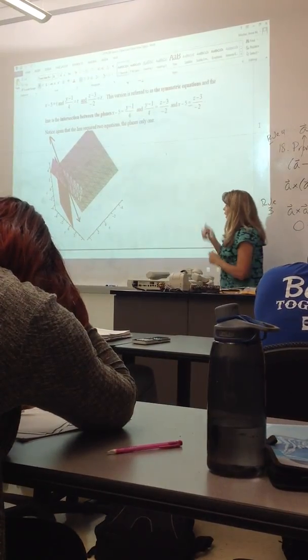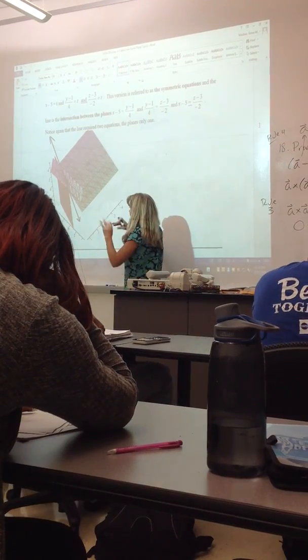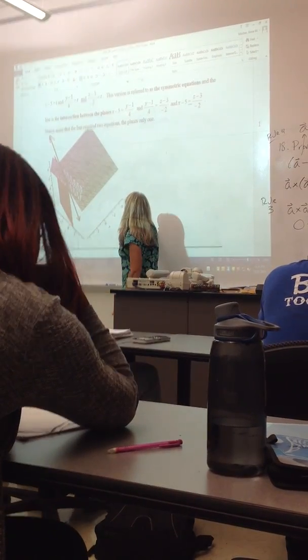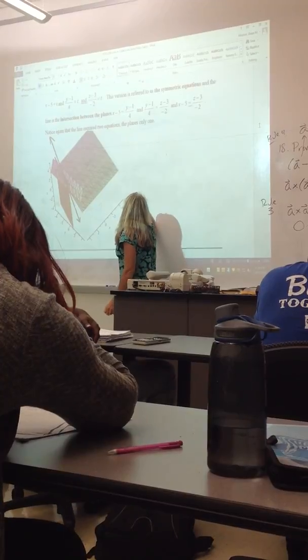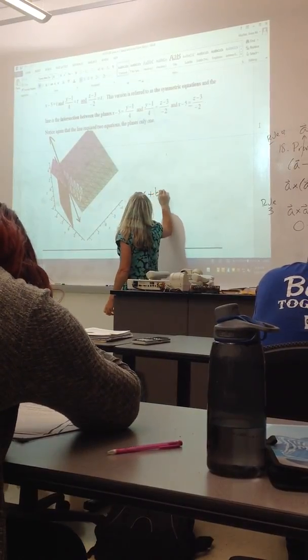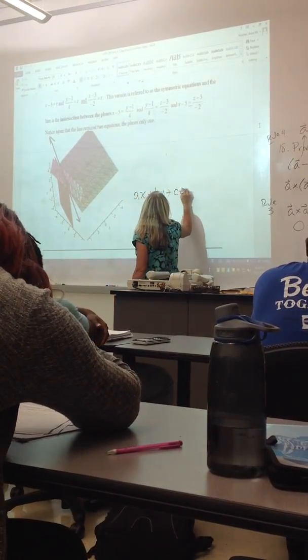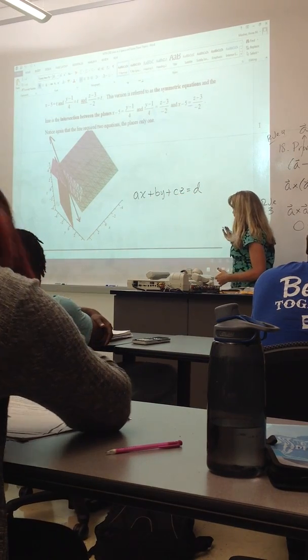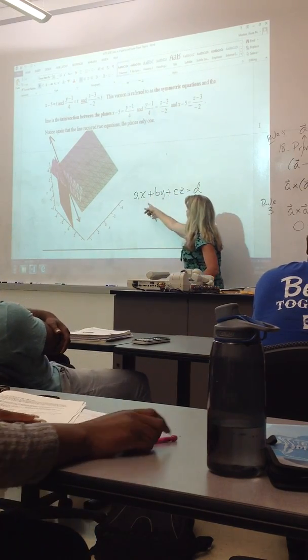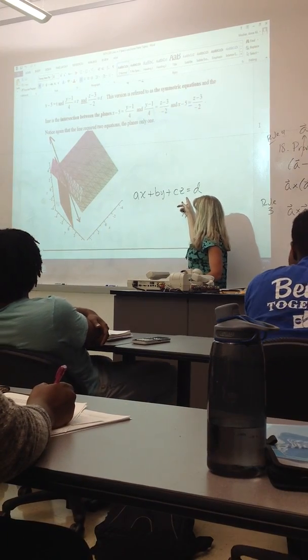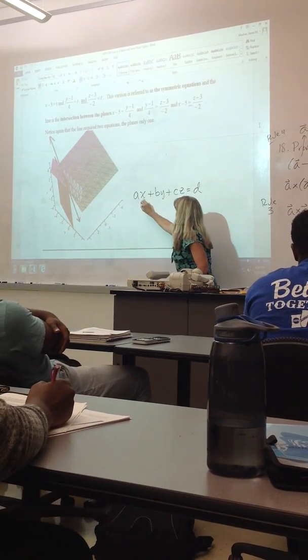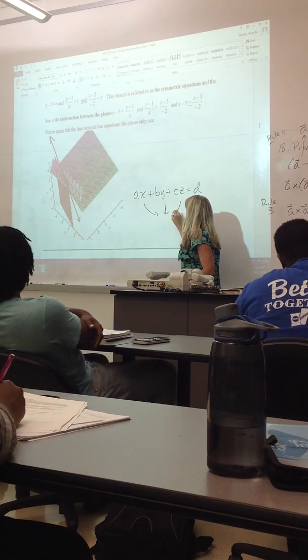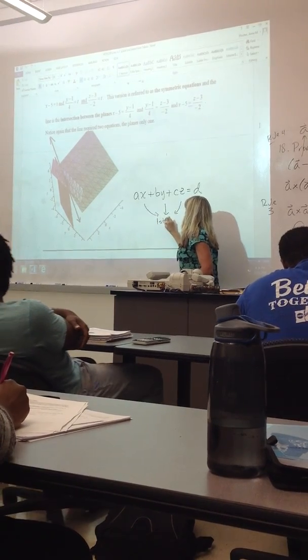So we already have denoted this, but we're going to get more into where the equation comes from. But the equation of a plane, if it's cleaned up, is of this form, where x, y, and z are all to the first power, so notice it's linear.